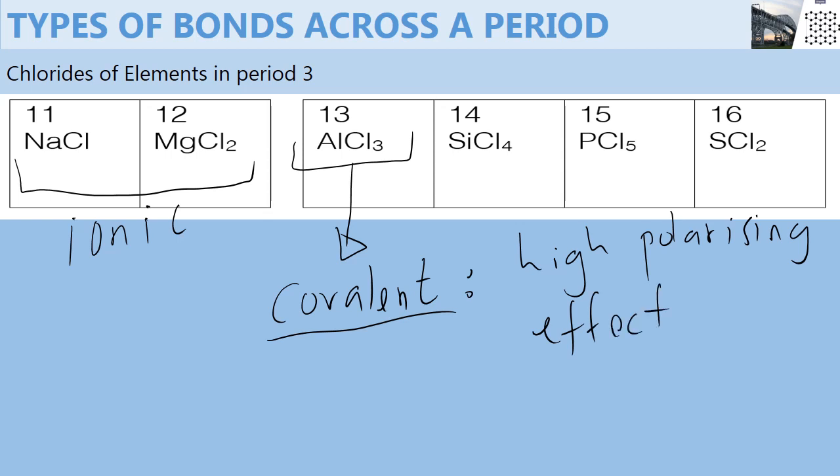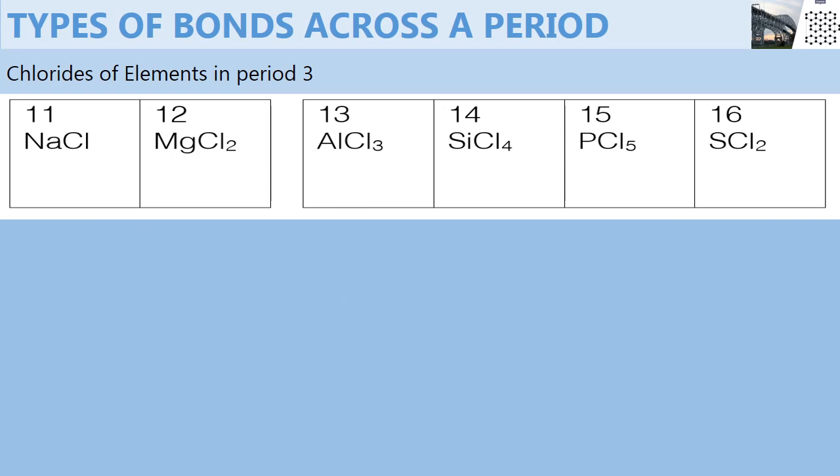And so instead of forming ionic bonds, it weakens chlorine and forms covalent and dative bonds. Also, there is a very small difference between the electronegativity of aluminium and that of chlorine for them to form ionic bonds. So instead, they form covalent bonds and dative bonds.